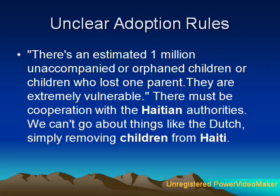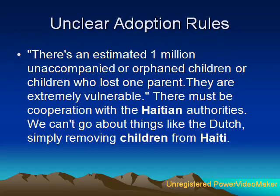There are unclear adoption rules at present — no formalised adoption processes — and the United Nations suggests this becomes a priority. Child trafficking from predators is a large risk due to lack of adults or family members to collect children from hospitals. Trauma may become a problem from lack of counsellors and psychologists to help with the healing process. Malnutrition from lack of food and clean drinkable water, increased risk of disease from water and airborne diseases, and lack of hygienic facilities and medical aid are all concerns. There is an estimated one million unaccompanied or orphaned children, or children who lost one parent, said Kate Conrad, a spokeswoman for the aid group Save the Children. They are extremely vulnerable.